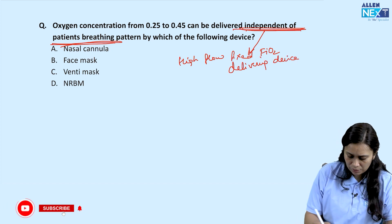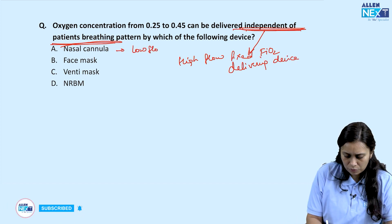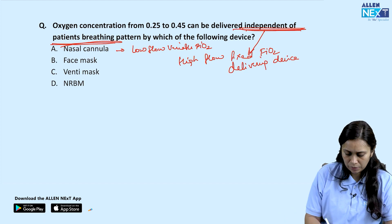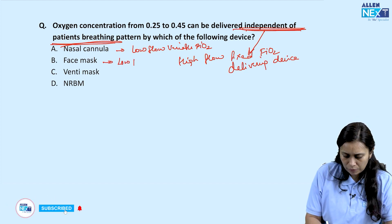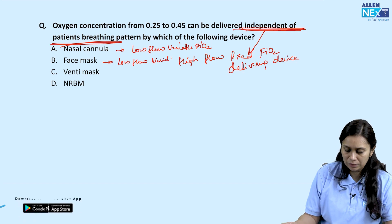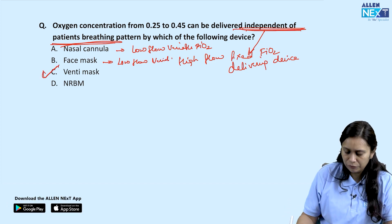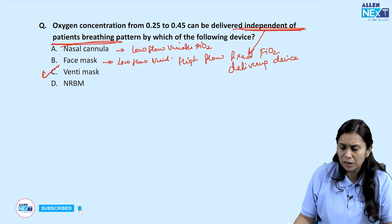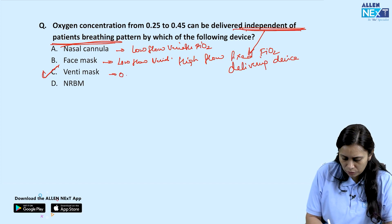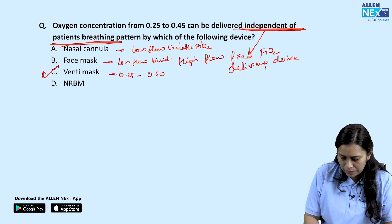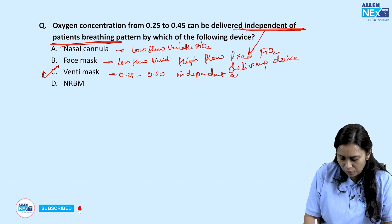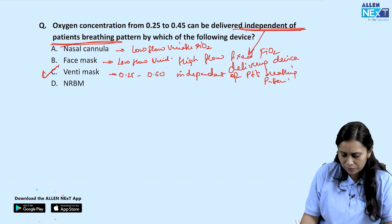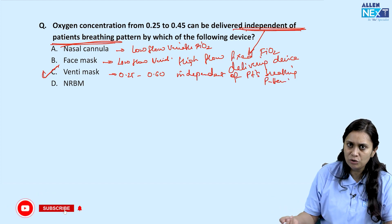A simple face mask is a low-flow, variable FiO2 device — it depends on the patient's breathing pattern. The Venturi mask, however, is a high-flow, fixed FiO2 delivering device. The Venturi mask can deliver from 0.25 to 0.60 FiO2 independent of the patient's breathing pattern, because it is based on the Venturi principle.